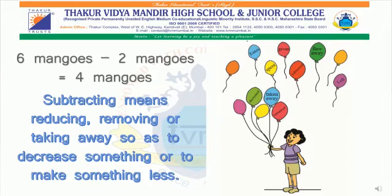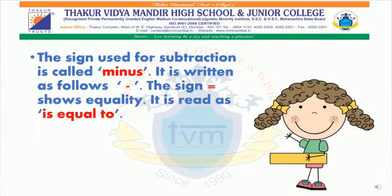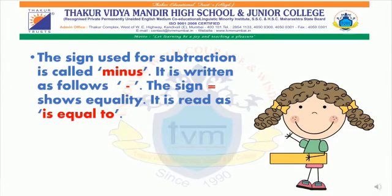The sign used for subtraction is called minus. It is written as shown on the screen. The equals sign shows equality and is read as 'is equal to.'